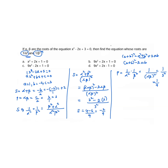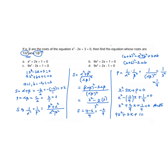For a quadratic equation, the formula is x squared minus (sum of roots) times x plus (product of roots) equals 0. Substituting: sum is minus 2 by 9 and product is 1 by 9, we get x squared plus 2 by 9 x plus 1 by 9 equals 0. Multiplying through by 9 gives 9x squared plus 2x plus 1 equals 0. This is the answer — option B.